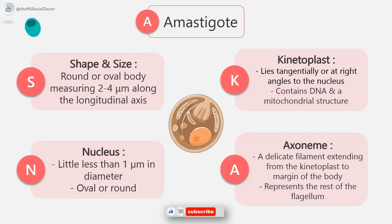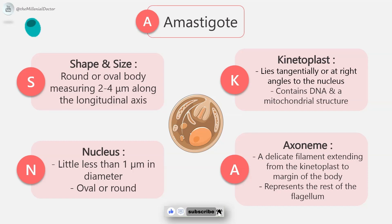The amastigote has a delicate cell membrane demonstrable only in fresh specimens. The nucleus measures just under 1 micrometer in diameter, is oval or round, and is situated in the middle or along the side of the cell. The kinetoplast, composed of a parabasal body and a blepharoplast, lies tangentially or at right angles to the nucleus, contains DNA and a mitochondrial structure. There is also an axoneme, also called a rhizoplast — a delicate filament extending from the kinetoplast to the margin of the body, representing the remnant of the flagellum.